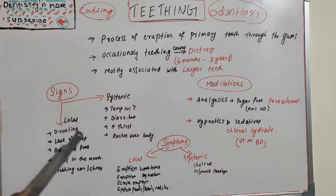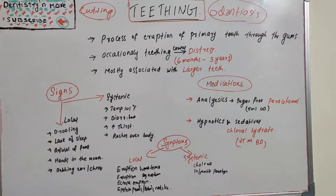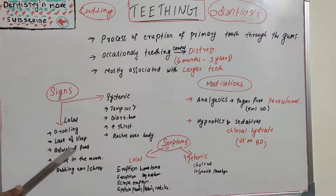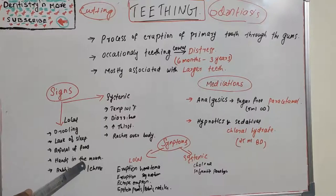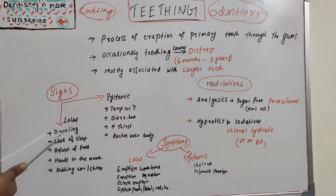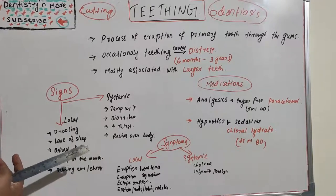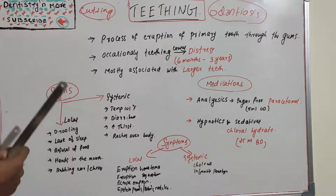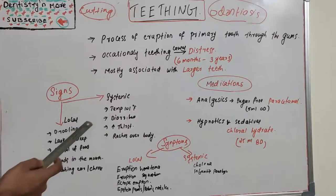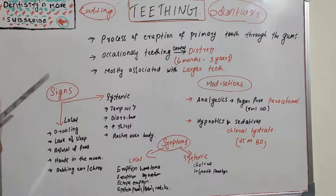The signs and symptoms are divided into local and systemic. Local signs include drooling, lack of sleep, refusal of food, keeping hands in the mouth, rubbing of ear and cheek as a consequence of referred pain during eruption of molars, mild rashes around the mouth due to skin irritation secondary to excessive drooling, fussiness that comes and goes, and decreased sleeping due to gum discomfort.